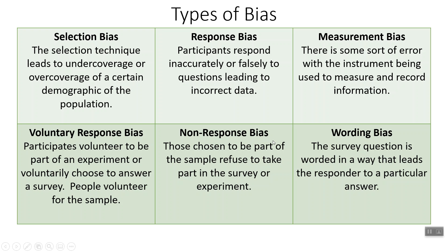Non-response bias — people often confuse this with voluntary response bias. With non-response bias, people are chosen by us to be part of our sample, and then once they're in our sample, they choose not to respond. With voluntary response, the people themselves are choosing to be in the sample. Non-response means we have chosen them to be in the sample, and then they're not responding.